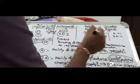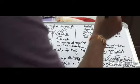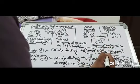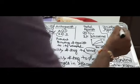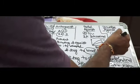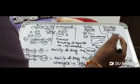Now, inverse agonists have the ability to bind with the receptor — affinity is plus one — but their intrinsic activity is minus one. This means they produce exactly the opposite effect to that of an agonist.